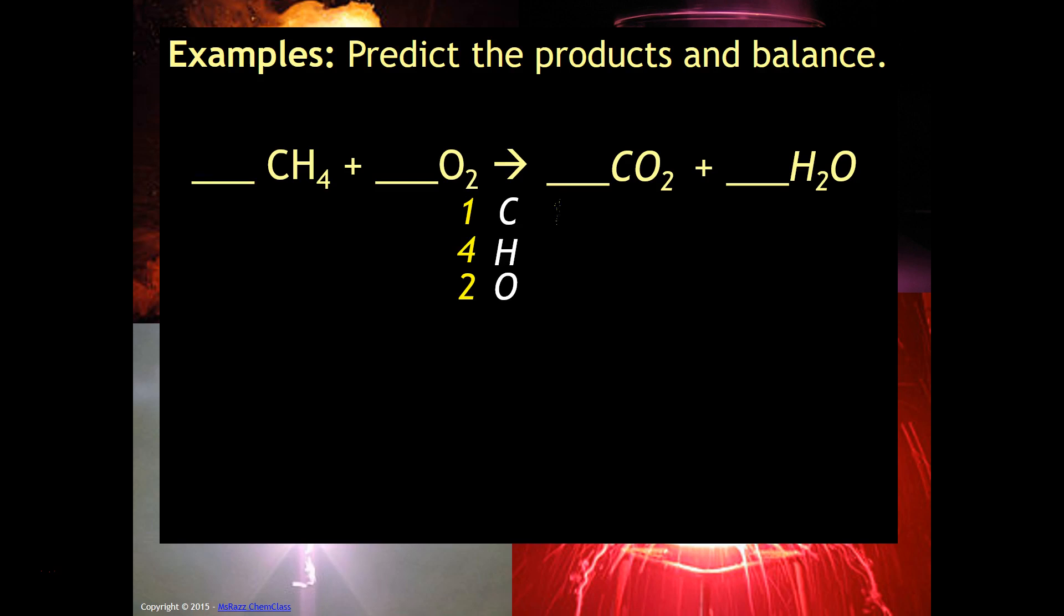On the right hand side I have one carbon, I have two hydrogen, and be careful with this I actually have three oxygen. Can you see that? Notice I have two here and I have one here. So that makes a total of three.